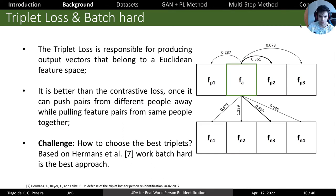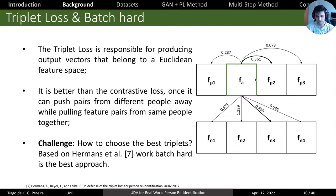The triplet loss is responsible for producing this output vector space. A challenge with triplet loss is how to choose the triplets, because with datasets of thousands of images there are many possible combinations. Hermans et al. proposed the batch-hard approach, where you always work with the hardest cases: for the positive, you select the feature furthest from the anchor, and for the negative, you select the feature closest to the anchor. Always working with the worst-case scenario helps achieve the best results.